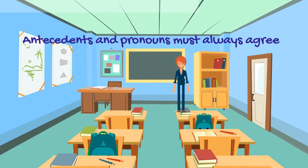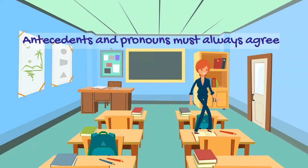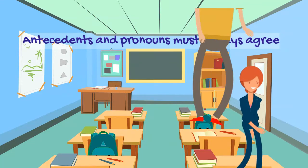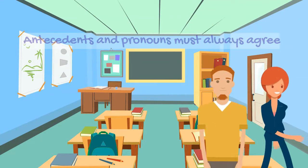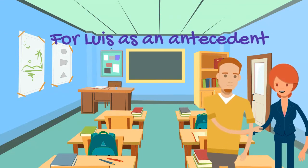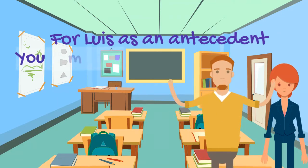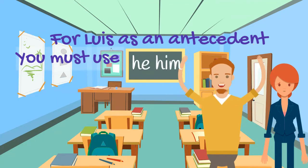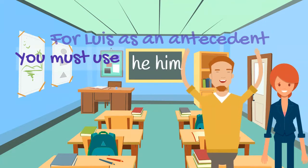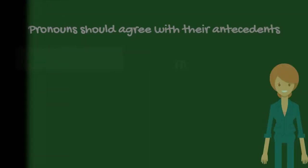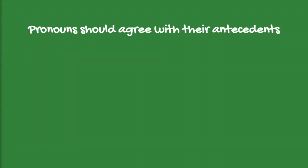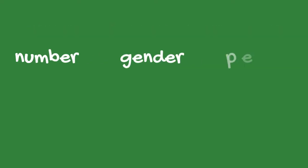Antecedents and pronouns must always agree. So if you're using Luisa as your antecedent, then you have to refer to Luisa with she or her or hers. Pronouns should always agree with their antecedents. This means they have to match in number, gender, and person.